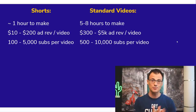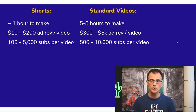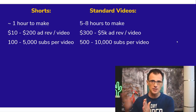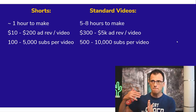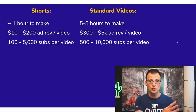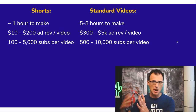Standard videos take anywhere between five to eight hours per video to make. My ad revenue with standard videos is between three hundred to five thousand dollars on average per video. With standard videos, you need to have an audience first on your channel before you start publishing, because if you just create 20 or 30 standard videos they might not get a lot of traction right away. I recommend you do both — create Shorts to grow your audience, then do standard videos to market various products to that audience.